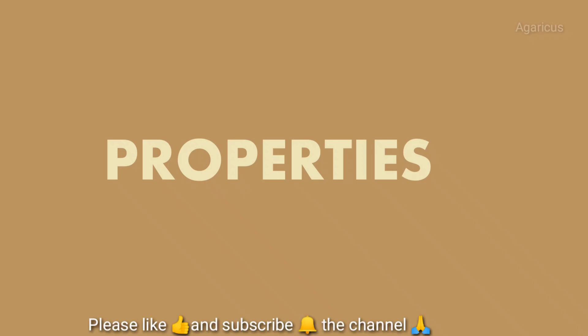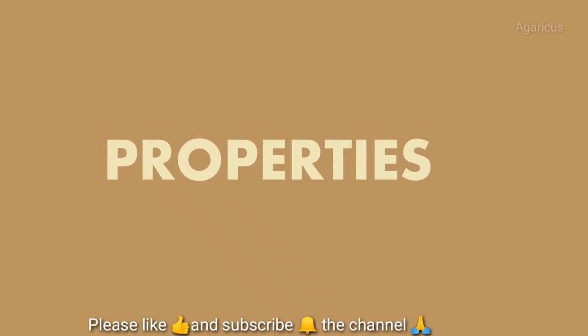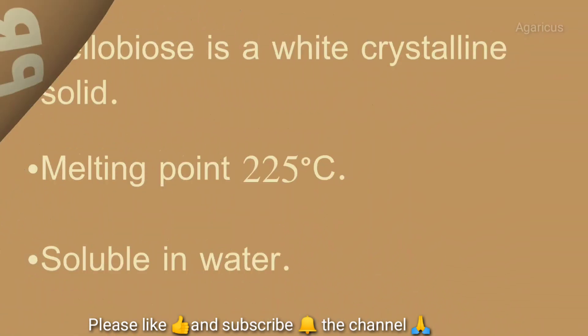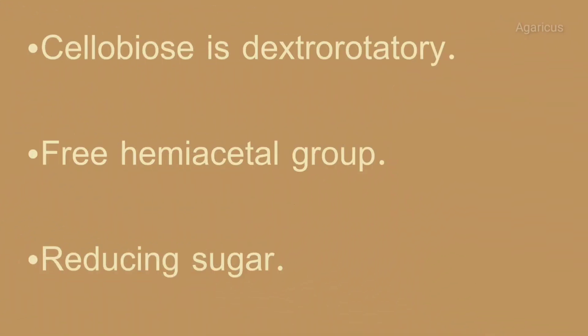Next, we can discuss about the properties of cellobiose. Cellobiose is a white crystalline solid. Melting point is 225 degrees Celsius. It is soluble in water. Cellobiose is dextrorotatory.